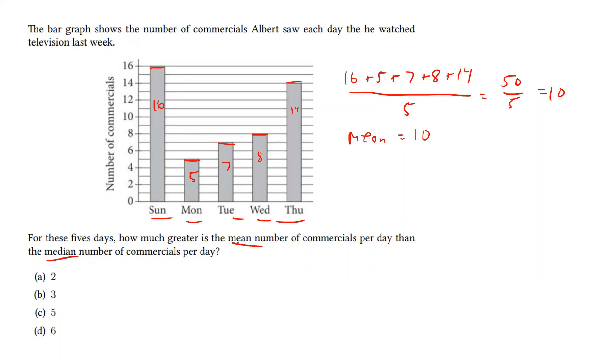Now we look at the median. The median is going to be the day that has the third most commercials, if ordered from least to greatest. Monday is the smallest, Tuesday is the second smallest, and Wednesday is in the very middle. Notice that Wednesday has 8, so the median is going to be 8. Taking the difference between 10 and 8 gives 2.